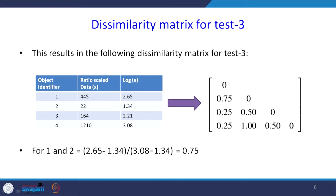We normalize the ratio-scaled dissimilarity matrix by dividing each value by 1.74 (that is, 3.08 minus 1.34). For example, for objects 1 and 2, we compute (2.65 minus the other value) divided by 1.74, which gives 0.75. For pair 4 and 1: (2.65 minus 3.08) divided by 1.74 gives that cell's value. The same standardization is done for all cells in the matrix.